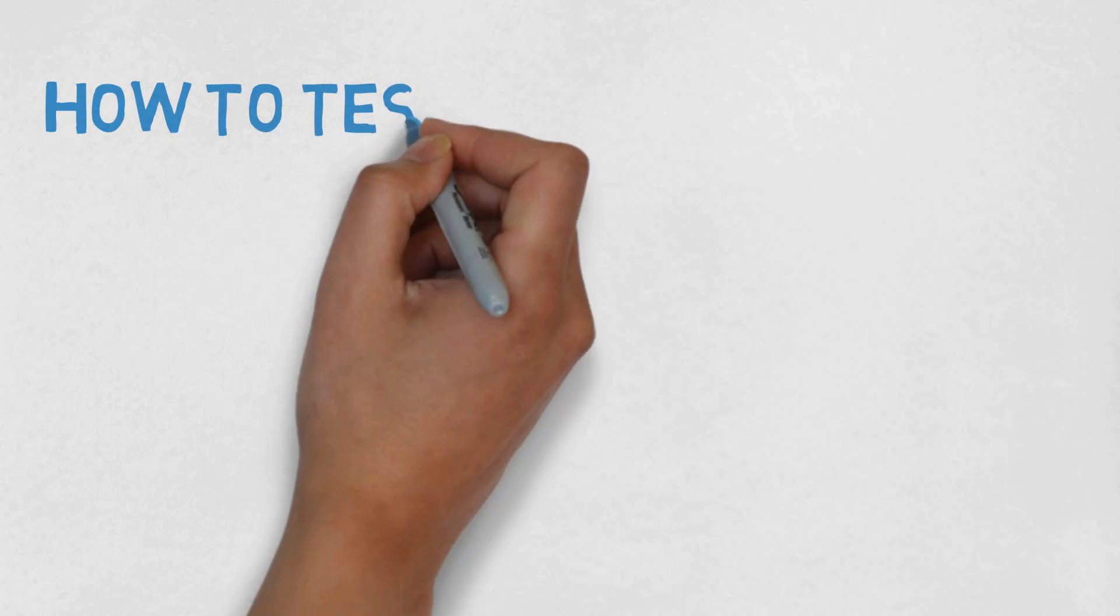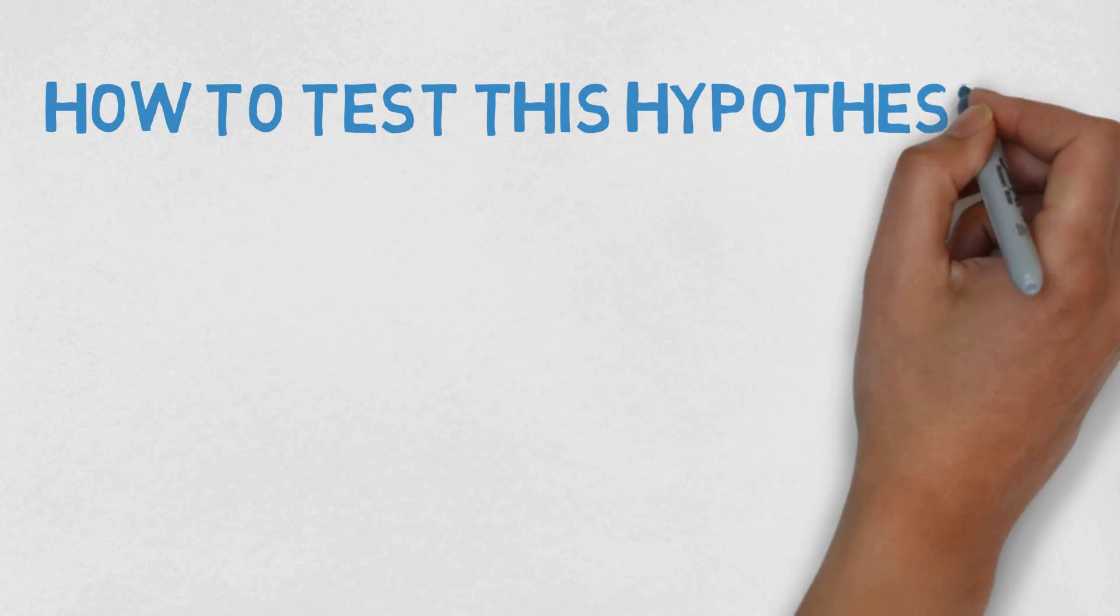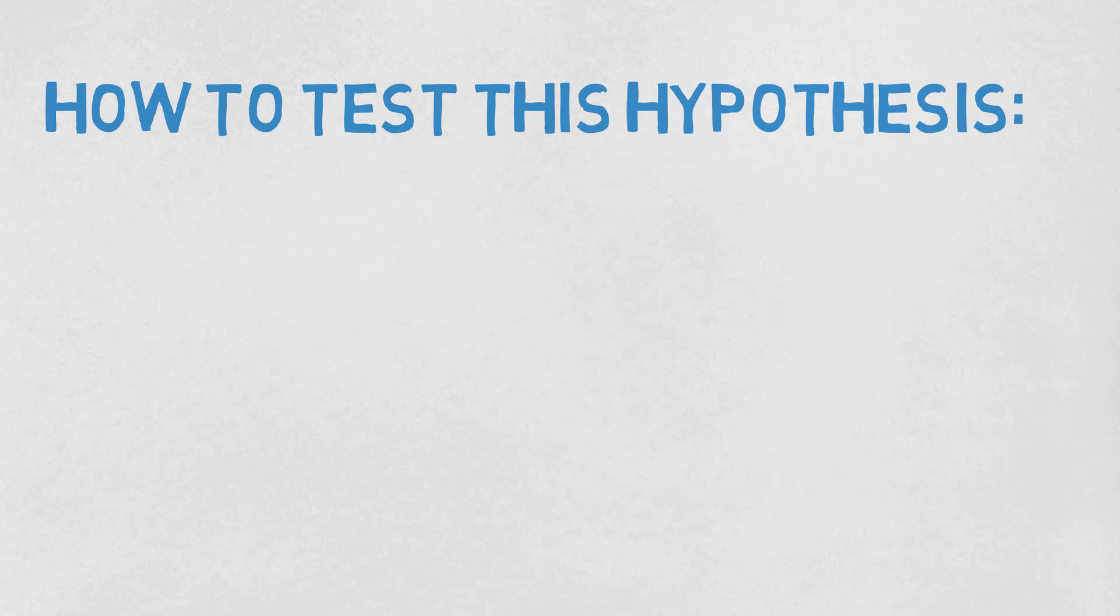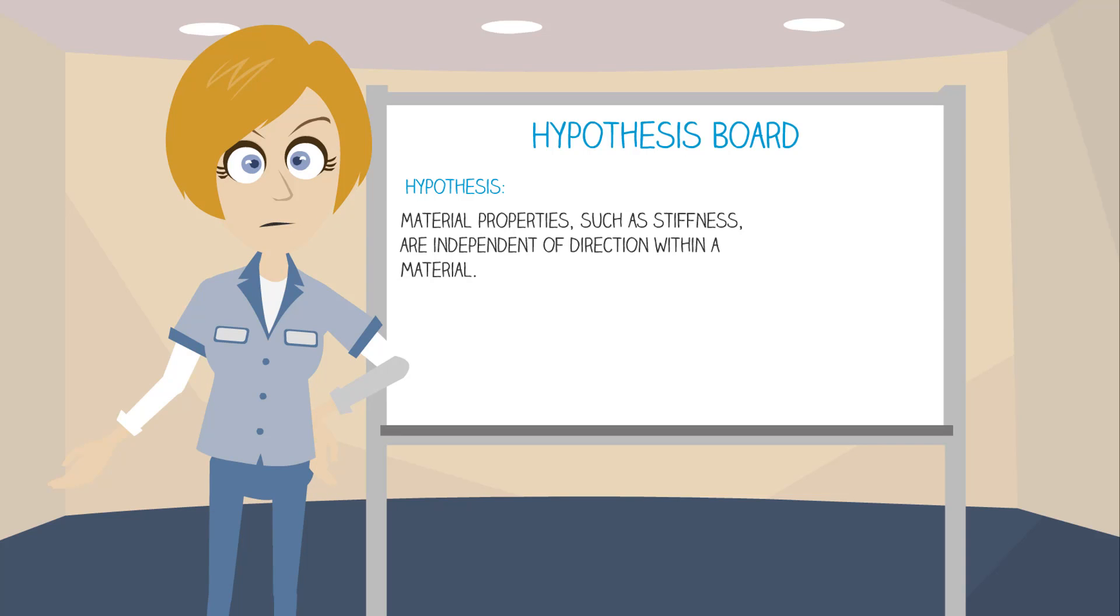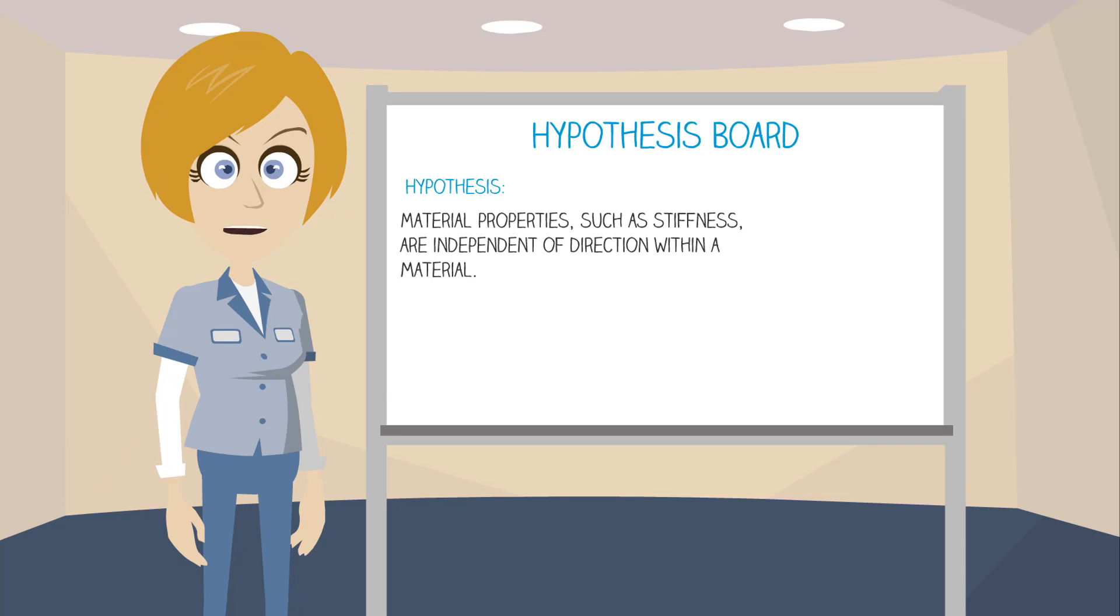So how can we test this hypothesis? The best way to test a hypothesis is to think of an experiment that would show us if our hypothesis is wrong. That may sound strange, but it's actually an important part of the scientific method. Only when we fail to disprove something can we hold it to be true.